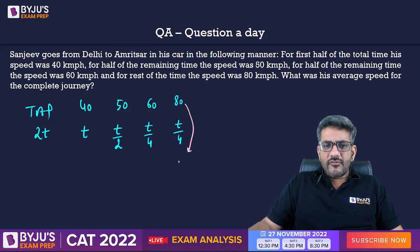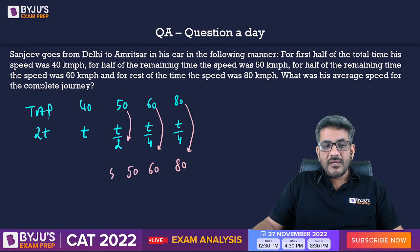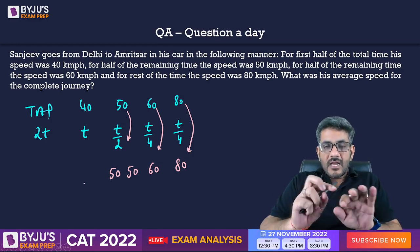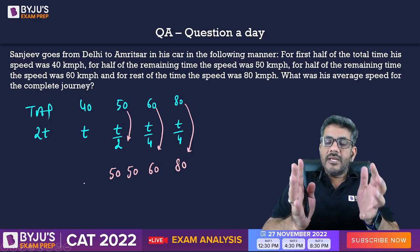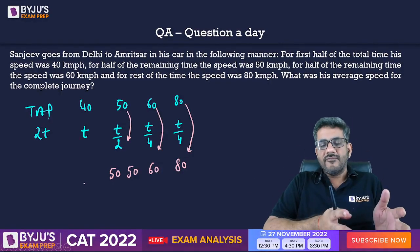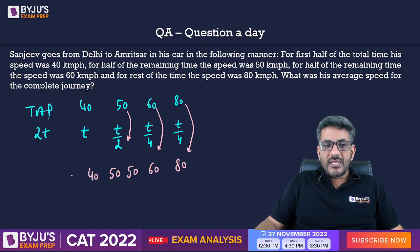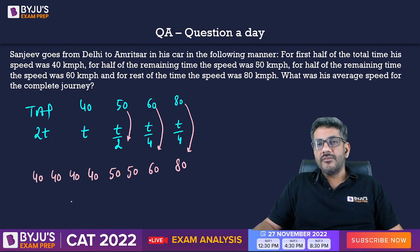Speed was 80 for t/4 time, and speed was 60 for t/4 time. Speed was 50 for t/2 time — I can break that into: speed was 50 for t/4 and speed was 50 for t/4. Similarly, speed was 40 for t time — I can say: 40 for t/4, 40 for t/4, 40 for t/4, and 40 for t/4. Now I have all these speeds for equal time intervals.